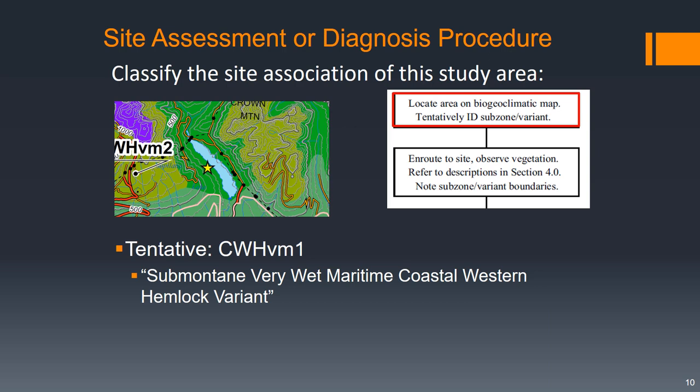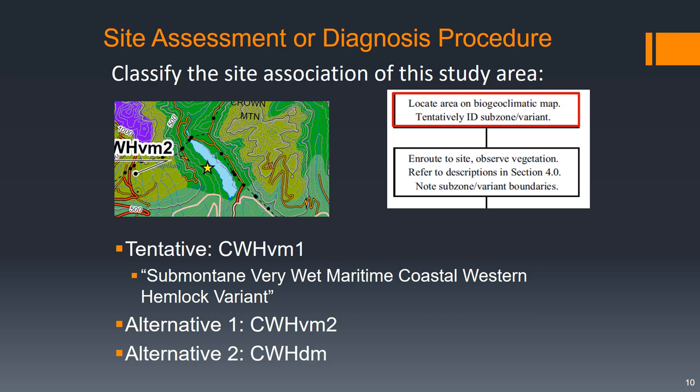So our tentative biogeoclimatic zone is CWH-VM1, or the sub-montane very wet maritime coastal western hemlock variant. But potential alternatives nearby are CWH-VM2 or CWH-DM. So we want to keep in mind that if we're on the boundary between regions, we might actually be in one of those other subzones or variants.